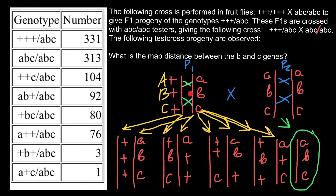These two parents can only produce eight combinations of their chromosomes. The second parent always contributes the same gamete — small a, small b, small c — while parent 1 contributes all eight variants listed here.